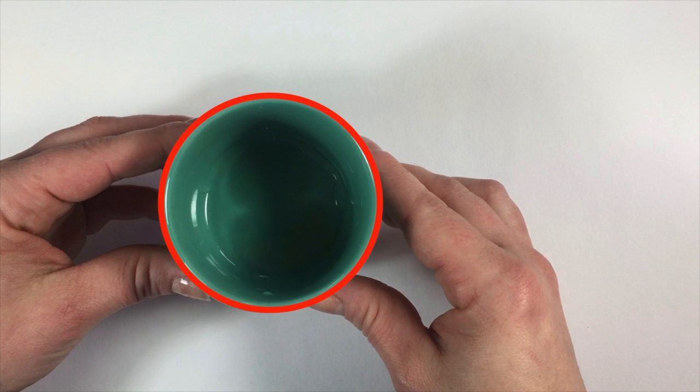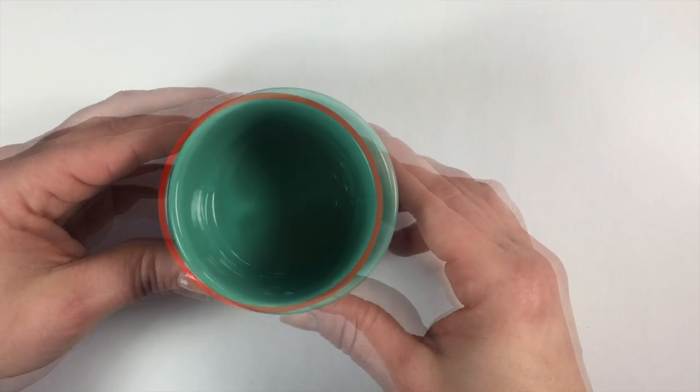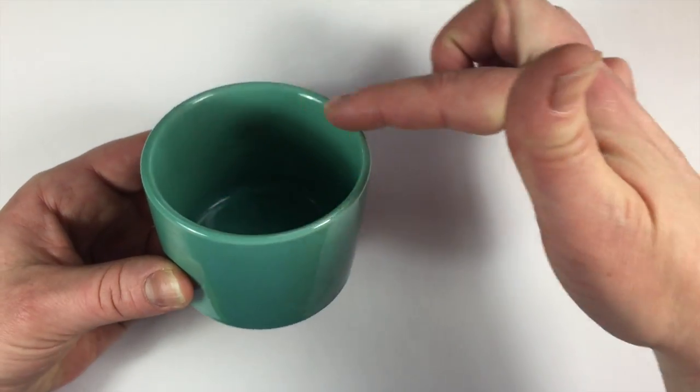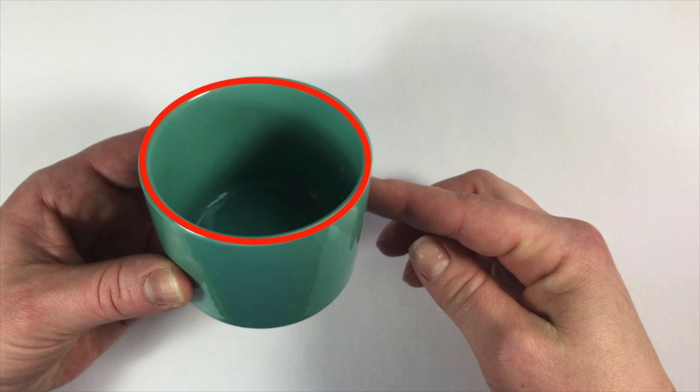Even though we know that the top of our cylinder is actually round like a circle, we're going to draw it like an oval in order to make it look 3D on our paper.